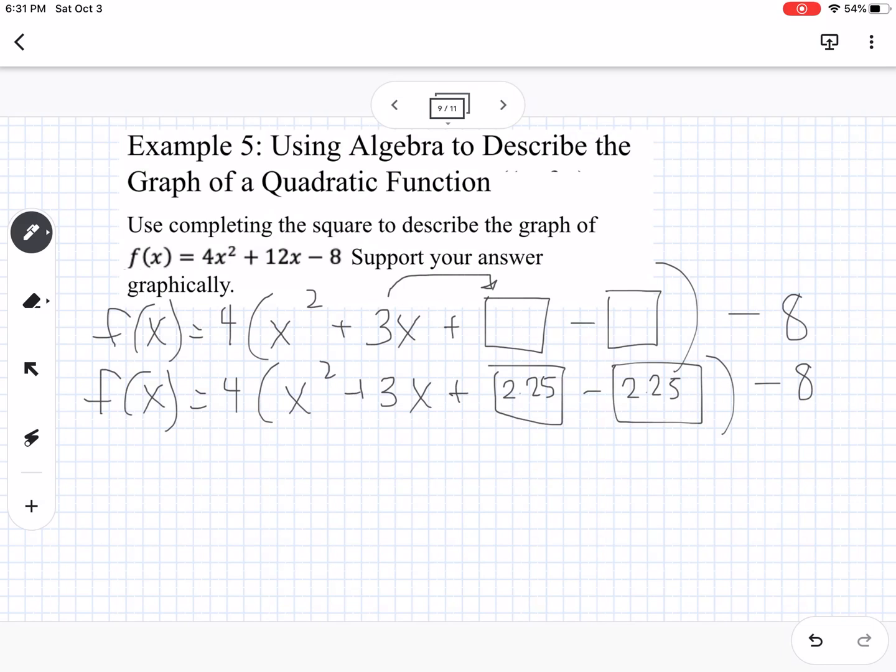So when we take out, so the part we want, we want to close the parentheses after the positive 2.25, so we're going to have to take out the negative 2.25. And when we do that, we have to remember that we have a 4 out front here. So we have to multiply negative 2.25 by 4. So this is going to be x² + 3x + 2.25. We're going to close the parentheses, then when we take negative 2.25 times 4, we get minus 9, minus 8.